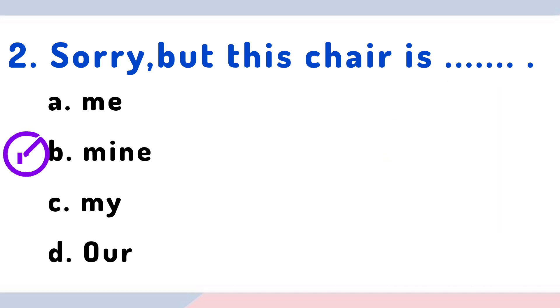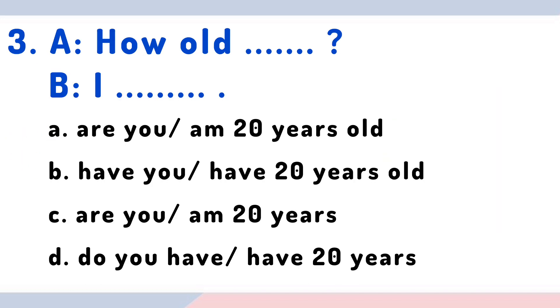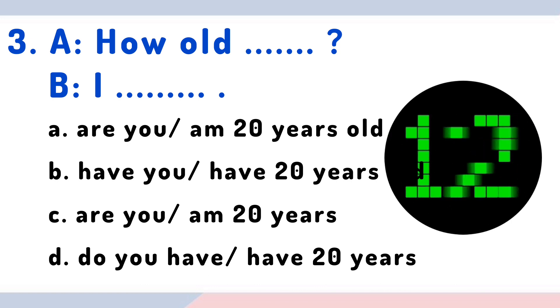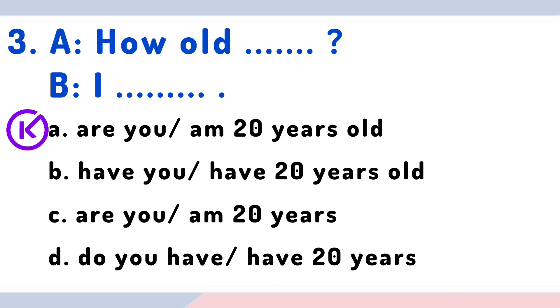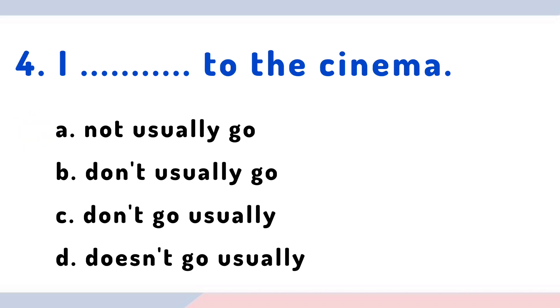Question 3: How old? I am 20 years old. Options: have you, have 20 years old, are you I'm, are you I'm 20 years, do you have, have 20 years. The answer is are you, I'm 20 years old. Question 4: I to the cinema. Options: not usually go, don't usually go, don't go usually, don't go usually. The answer is don't usually go.